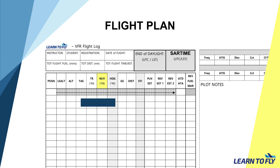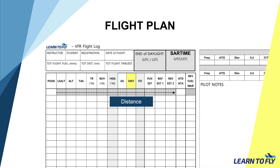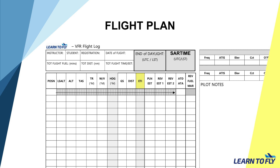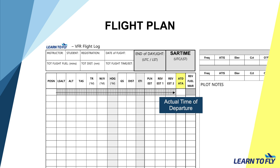TR is track — we will use the protractor to measure the track on our route. W/V is wind direction and velocity, meaning wind direction and wind speed. HDG is heading, which is the aircraft's heading — whenever there is crosswind, the heading will differ from the track. GS is ground speed, which is the speed of the aircraft over ground after considering the wind. DIST is distance between waypoints. ETI is estimated time interval, the approximate time required to travel between waypoints. PLN EST is planned estimate. RAV EST 1 and 2 is revised estimate 1 and 2. ATD is actual time of departure. ATA is actual time of arrival. RAV FUEL MAR is revised fuel margin.